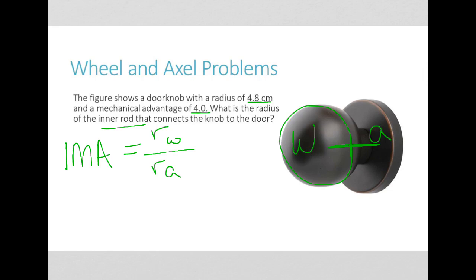So if my mechanical advantage is 4 and the radius of my wheel is 4.8 centimeters, what is my radius of the axle? I can rearrange this, so I get 4 times RA equals 4.8 centimeters.